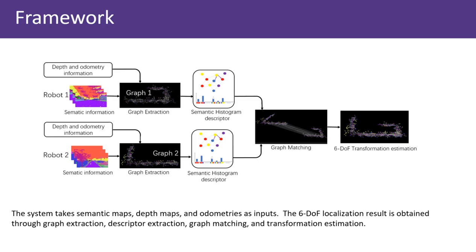The six degrees of freedom localization result is obtained through several methods, including graph extraction, descriptor extraction, graph matching, and transformation estimation.